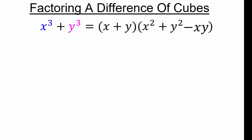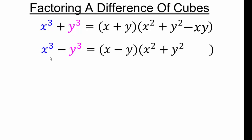Now let's see what happens with a difference of cubes. As a mathematician, if you worked hard once, take advantage of it. Look at x³ + y³ and replace y with −y: (−y)(−y)(−y) = −y³, giving a difference of cubes. In the sum of cubes formula replace y with −y: x² stays x², (−y)(−y) = +y², and the middle term y becomes positive xy. If you know one formula you can get the other by replacing y with −y.